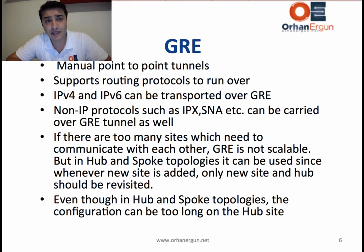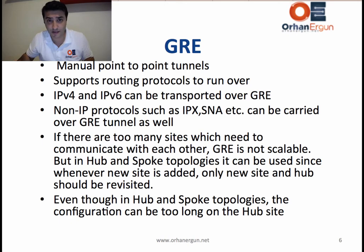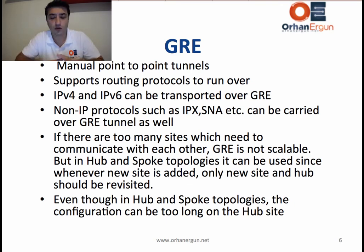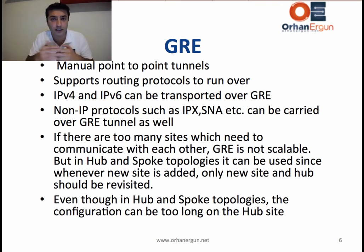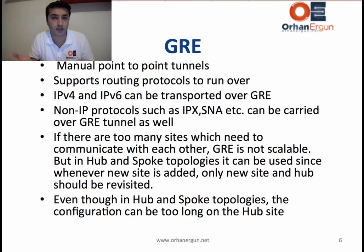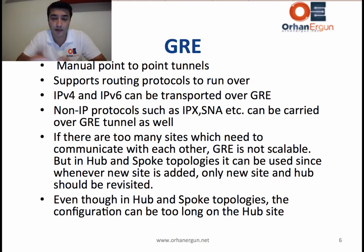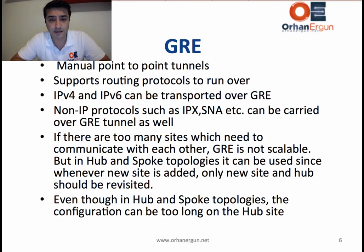GRE tunnels can be created on top of IPv4 and IPv6 infrastructure — the underlying infrastructure can be either. Also, as an overlay on top of GRE, you can run IPv4 and IPv6. So any IPv4 routing protocols, or IPv6 routing protocols like OSPFv3, EIGRP, and IS-IS can all run on top of GRE tunnels.